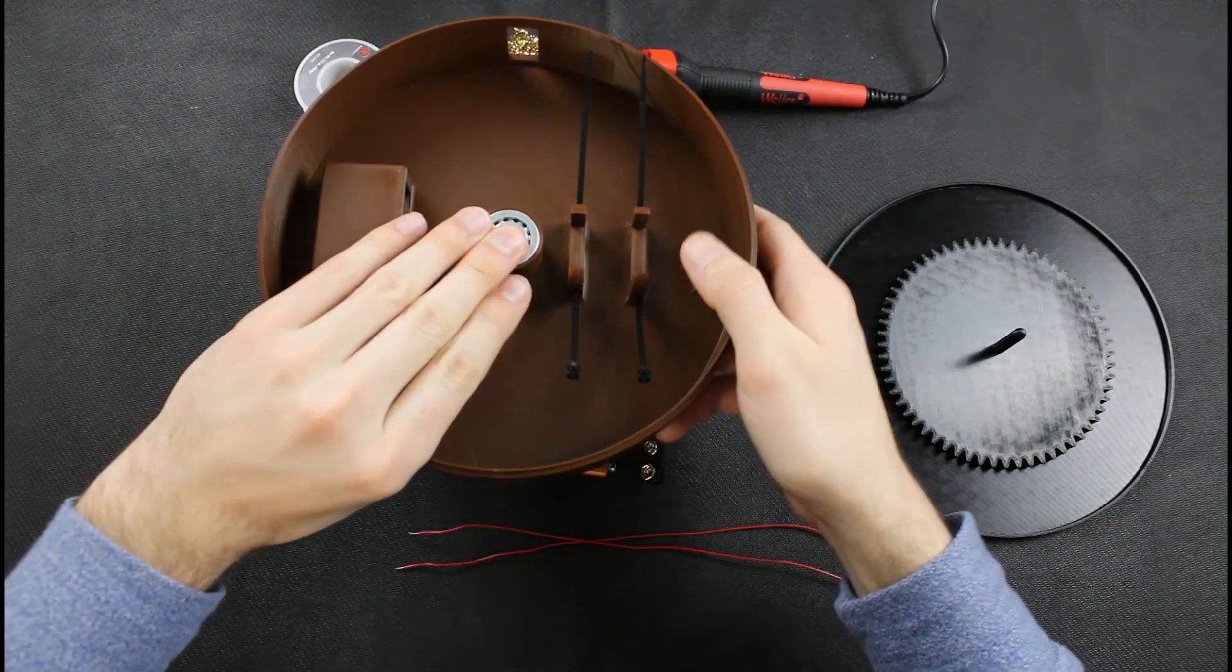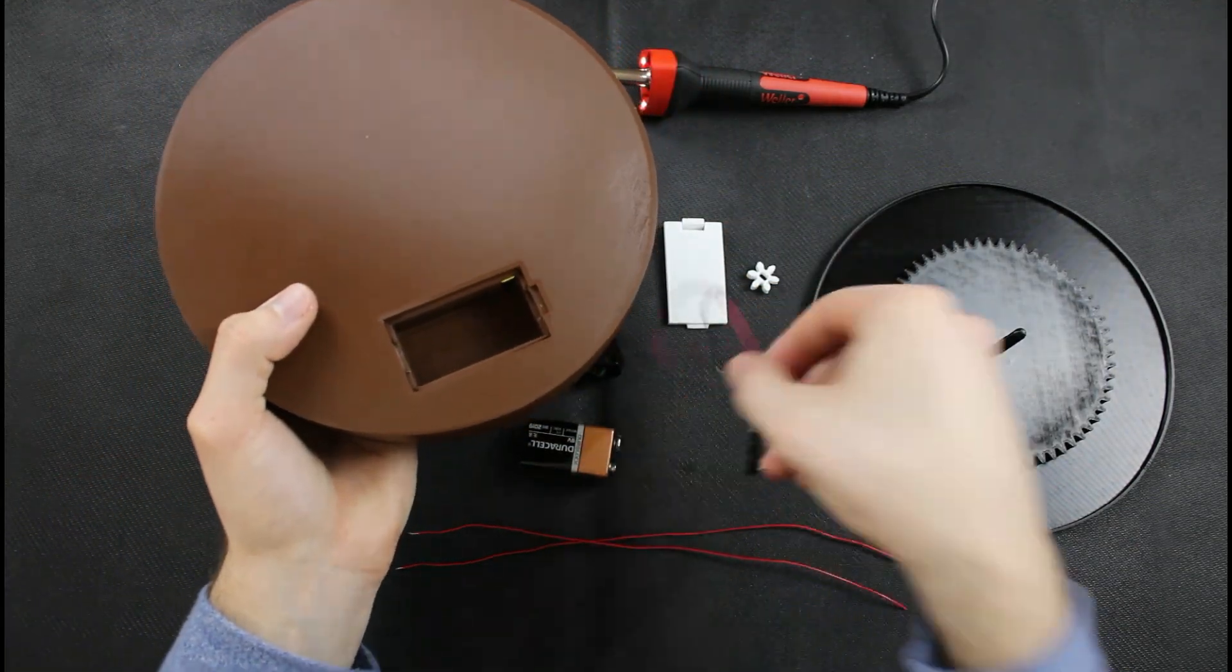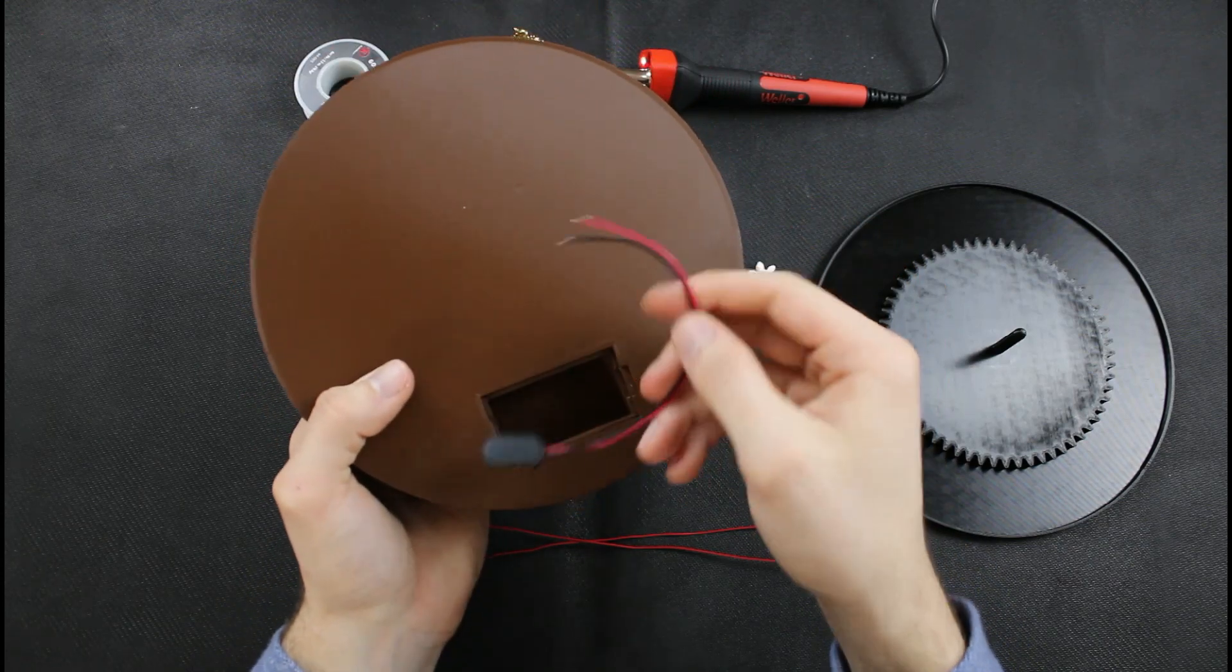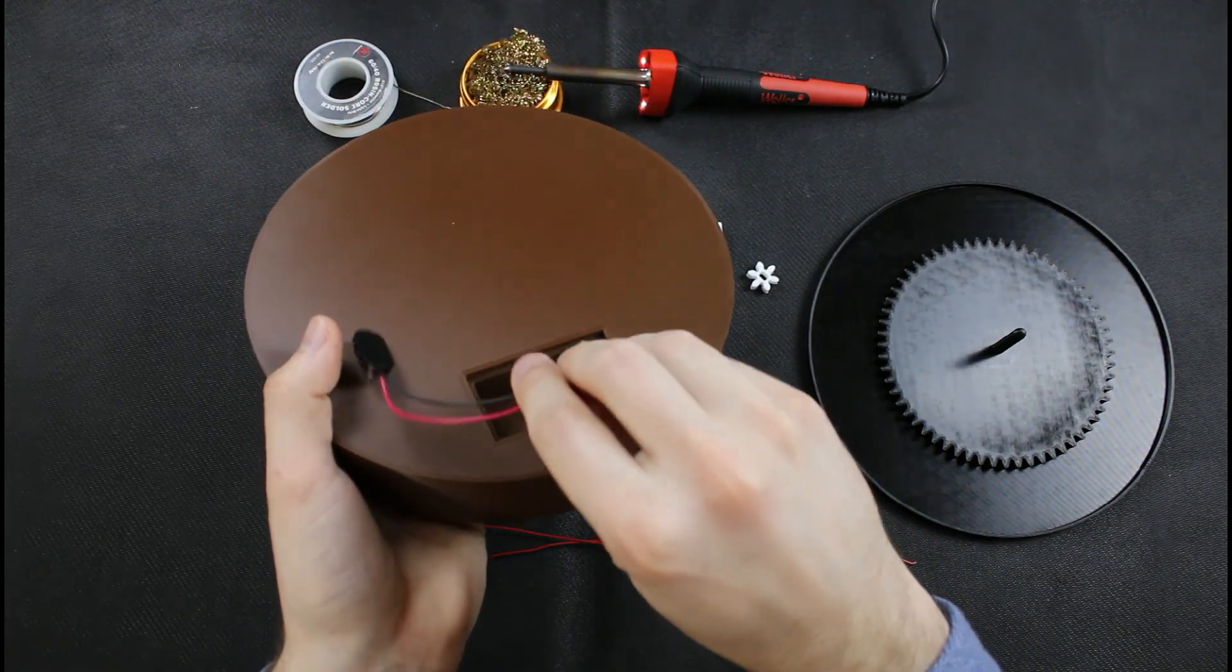Next I'm going to carefully thread the wires for the 9-volt battery clip through the hole in the small battery compartment on the underside of the base.